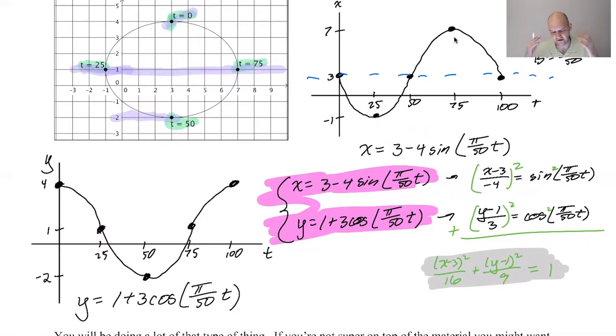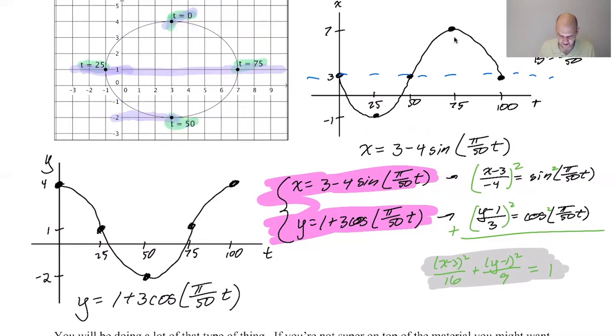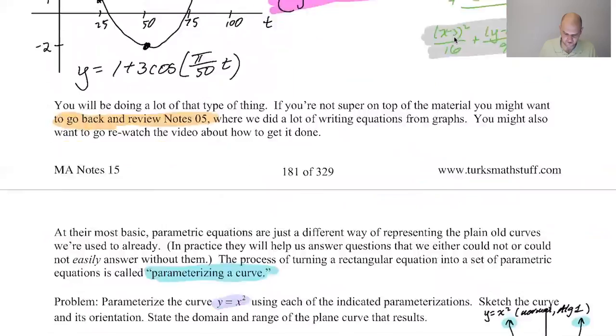I think that ellipses and circles are the best way to think about, to connect information to parametric equations because they're pretty well behaved and it's not that bad. So here, the range of this plane curve should be, what can y do? Well, look at the equation for y. y is one plus three cosine. One, and you can go up three, you can go down three. So from negative two to four, and that's what the range of this plane curve is. So let's go back to here.